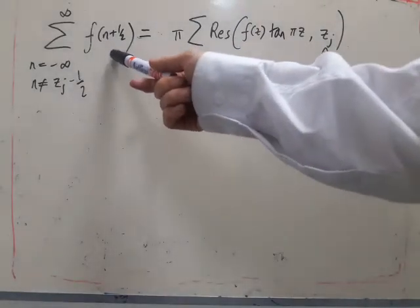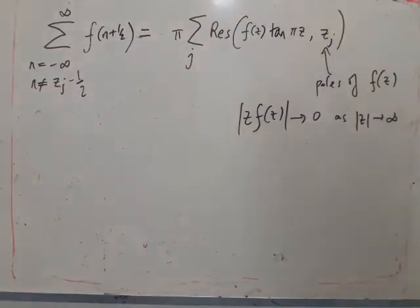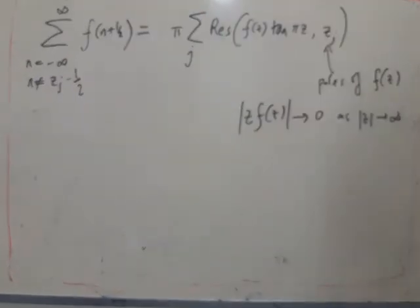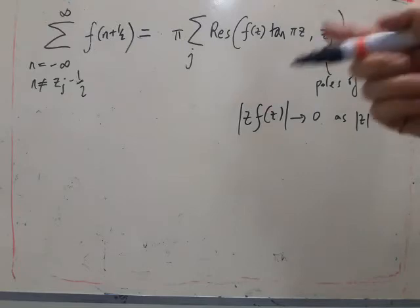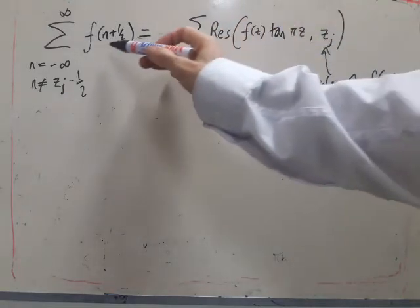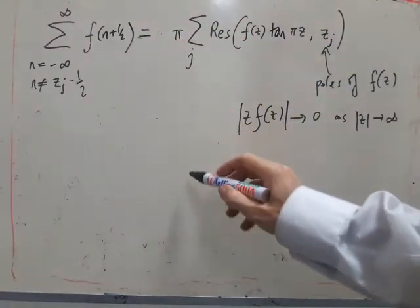So this formula for f of n plus a half might look a bit strange to start with, but actually it's useful because if you only want to sum a function of just the odd numbers, then you can write the odd numbers,